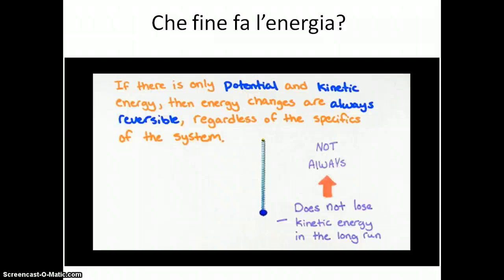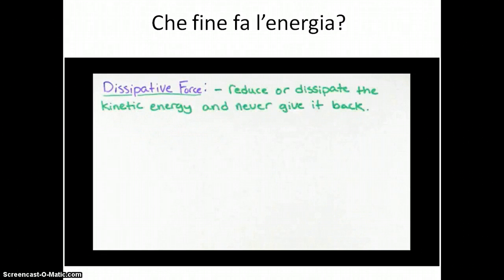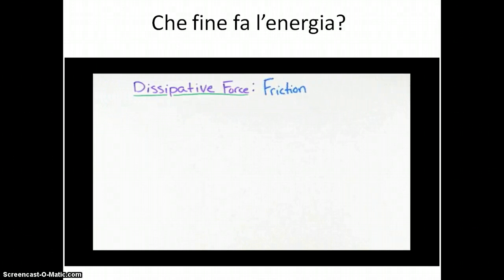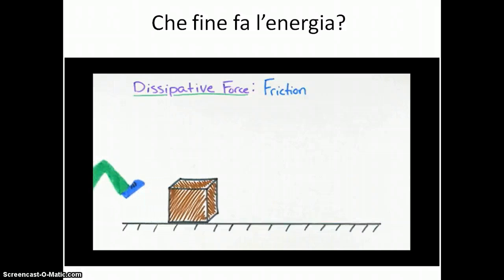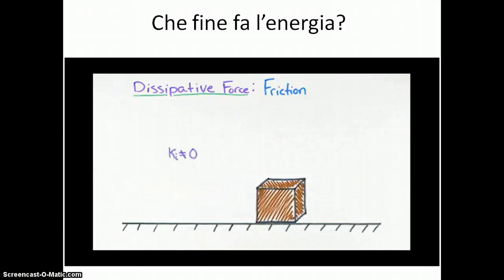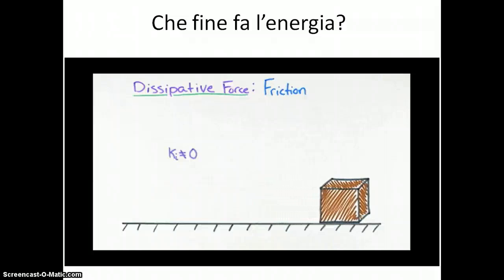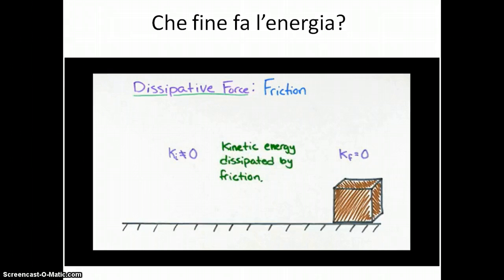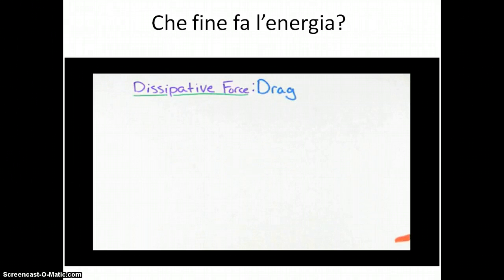We see that the mass isn't losing any kinetic energy in the long run. However, this doesn't always have to be the case. There are other types of forces that we call dissipative forces, which dissipate the energy that once was accessible as or associated with the system's kinetic energy. Friction is one such force. We know that if we give a box a shove, the box starts out with some kinetic energy, but eventually, as the box slides across the floor, the box will come to rest. It no longer has any kinetic energy. We say that the energy was dissipated by friction. The drag force we studied earlier is another example of a dissipative force.